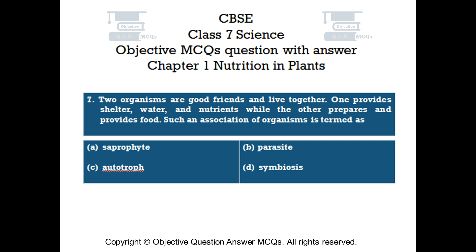Question number 7. Two organisms are good friends and live together. One provides shelter, water and nutrients while the other prepares and provides food. Such an association of organisms is termed as: Option A: saprophyte. Option B: parasite. Option C: autotroph. Option D: symbiosis.